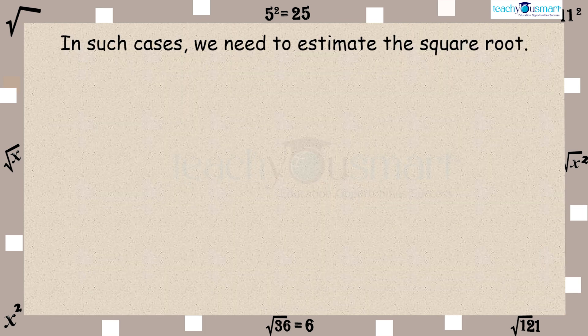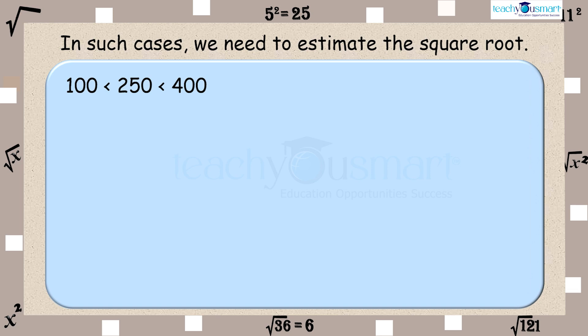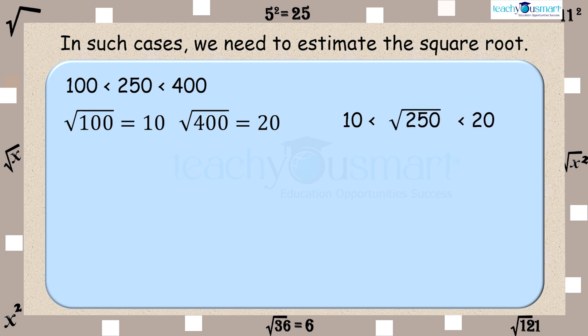In such cases we need to estimate the square root. We know that 100 < 250 < 400. We know the square root of 100 equals 10 and the square root of 400 equals 20, so 10 < √250 < 20.